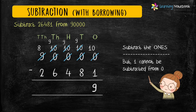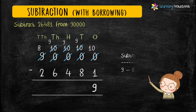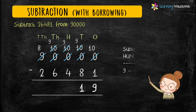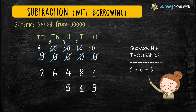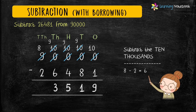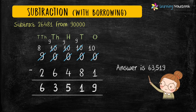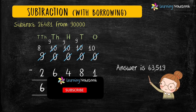Subtract the digits at the tens place: 9 minus 8 equals 1. Move to the hundreds place: 9 minus 4 equals 5. Then subtract the digits at the thousands place: 9 minus 6 equals 3. And at the ten-thousands place: 8 minus 2 equals 6. So we have got the answer as 63,519.